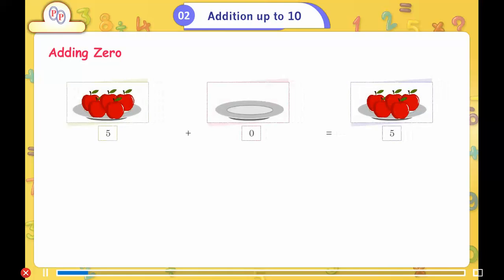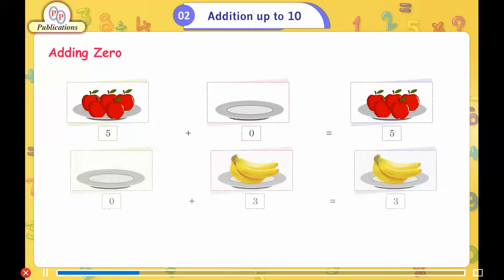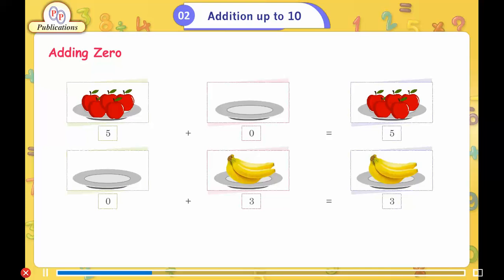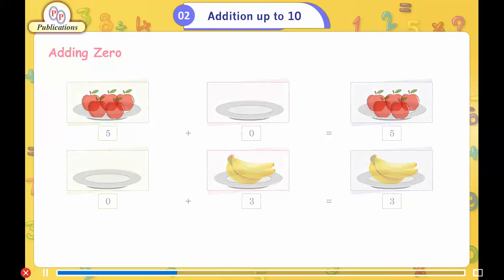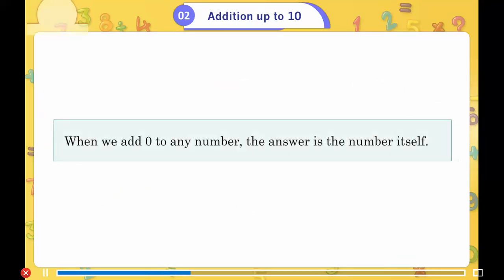Adding 0. 5 plus 0 is equal to 5. 0 plus 3 is equal to 3. When we add 0 to any number, the answer is the number itself.